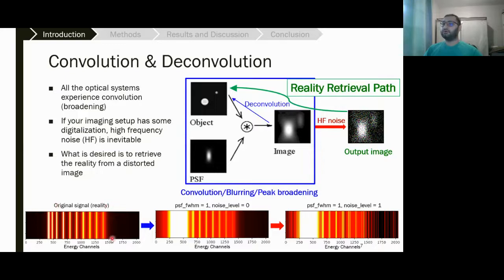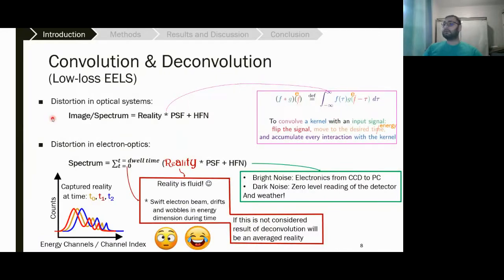If you have an object like this and your system has a probe or machine-related parameters that observes like a point spread function, what you will get as the output image will look like this. If your system has some electronic parts, the problem might be worse and you have high frequency noise. The same thing happens in spectral deconvolution and distortion. What happens for our EELS signal is that if this is the reality we want on the left, after considering the system having a point spread function, everything will be blurred and broadened.